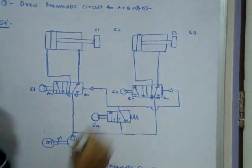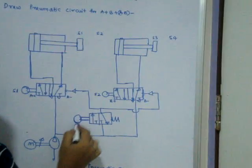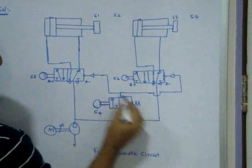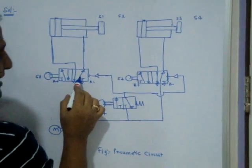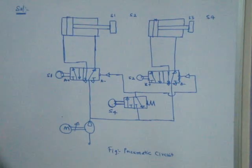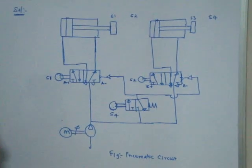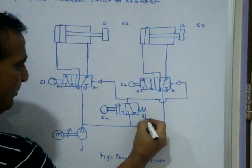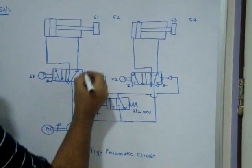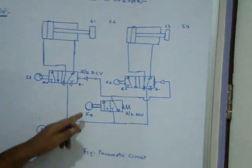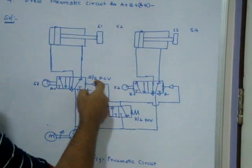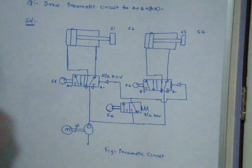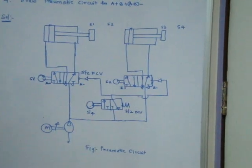This is a complete circuit of A+, B+, AB-. You must not write S4 and S4 on both sides — this is wrong. Take one more valve, that is a 3/2 DCV, direction control valve, and the main valve is a 5/2 DCV. You mention S4 on the 3/2 valve and give the same connection in parallel, because AB- means both should retract at a time. I will show this on the software to verify if this circuit is working properly. Two things to take care: spring return here, and pilot operated here.